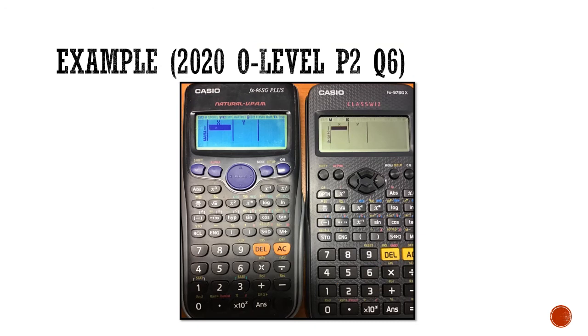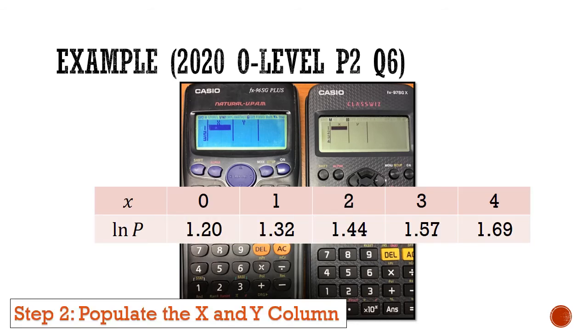Now the calculator will give you a data table to fill up for two columns of x and y respectively. So let's pull out the data that we have. We have the big X equals 0, 1, 2, 3, 4. So that's going to go into our first column. And we have ln P equals 1.20, 1.32, and so on. That's going to go into our second column. So now take some time to populate the x and y column.